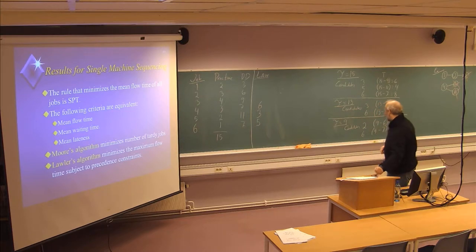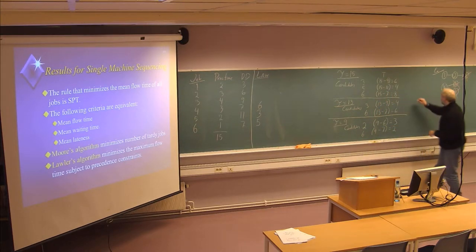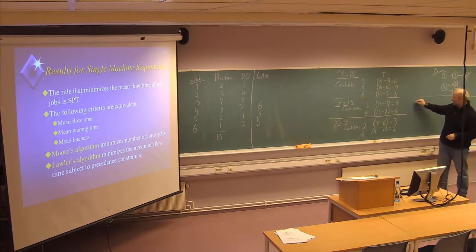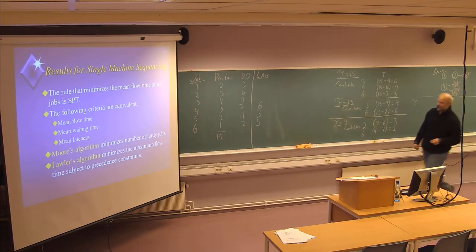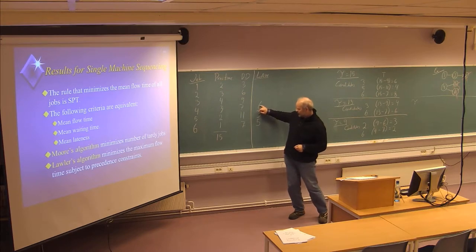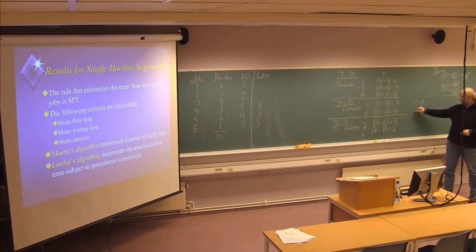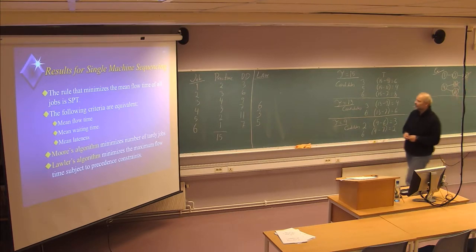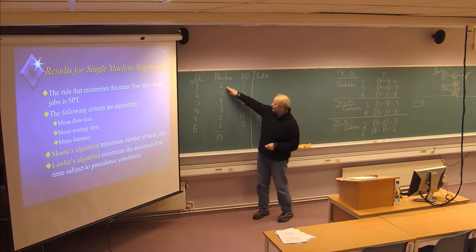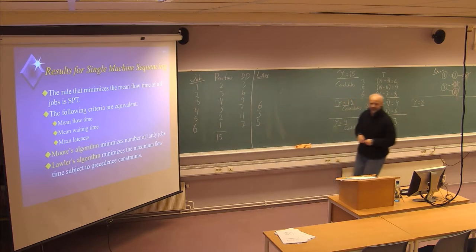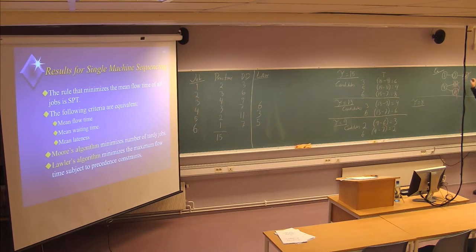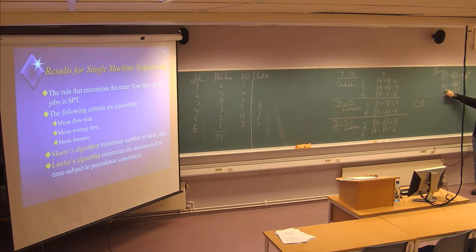Now look at the makespan of the remaining jobs. It used to be nine, and now we have selected job number six, which has a processing time of one. The remaining jobs will take eight days to finalize — job number one, two, and four — a total of eight days. According to the precedence diagram, the jobs now available to be last among the three remaining jobs are job number four and job number two.